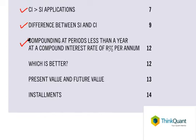We'll look at compounding a sum for periods which is less than a year, for example what happens if we compound a sum of money every six months or every three months.